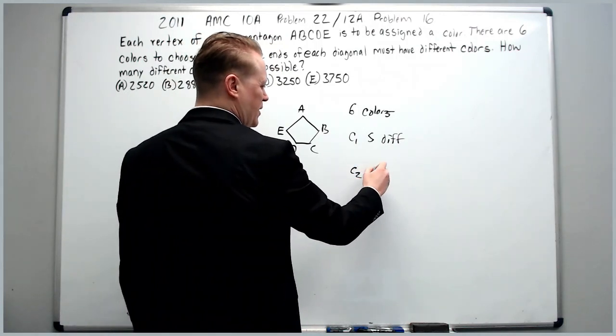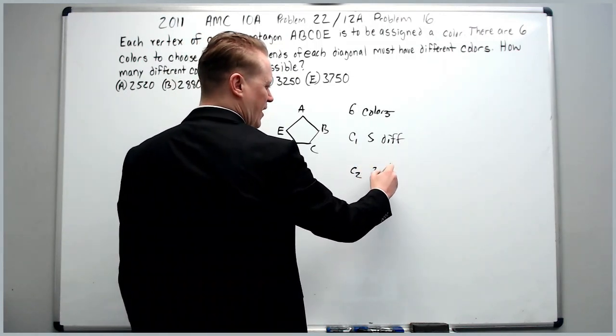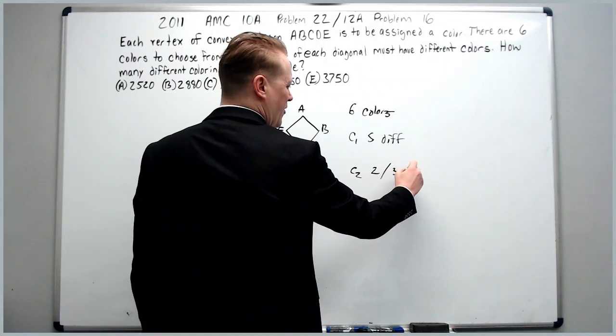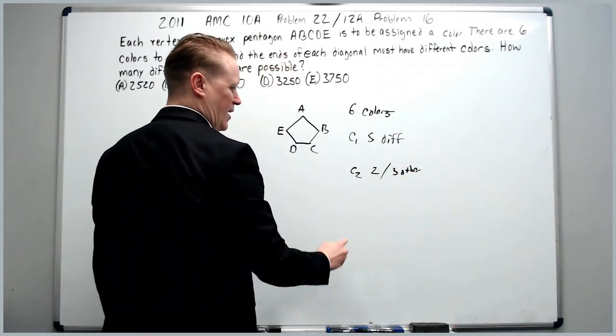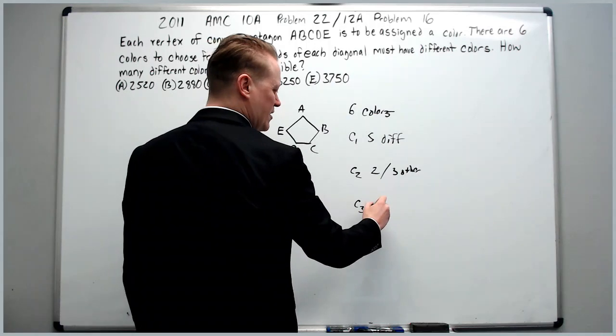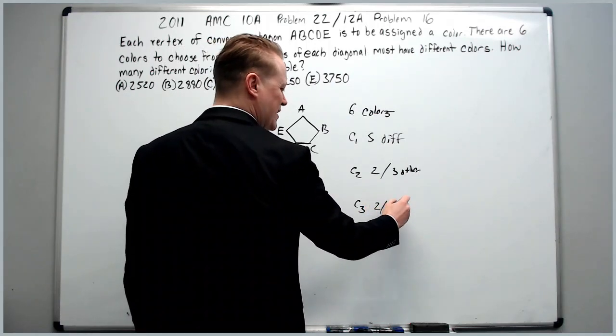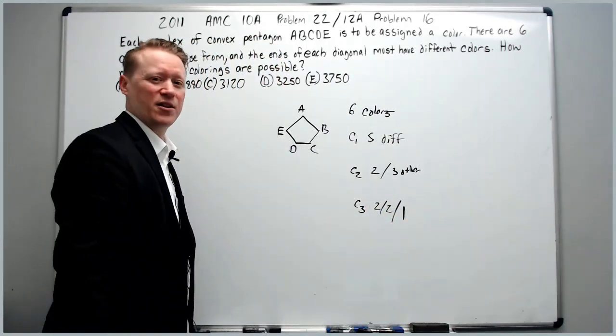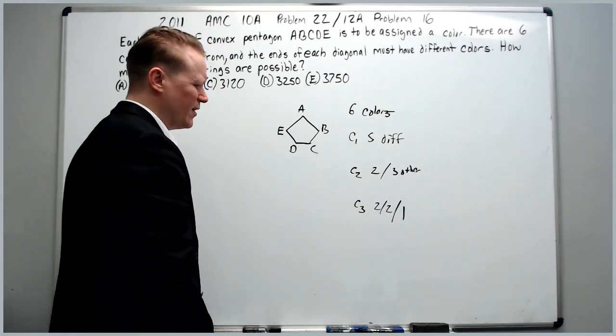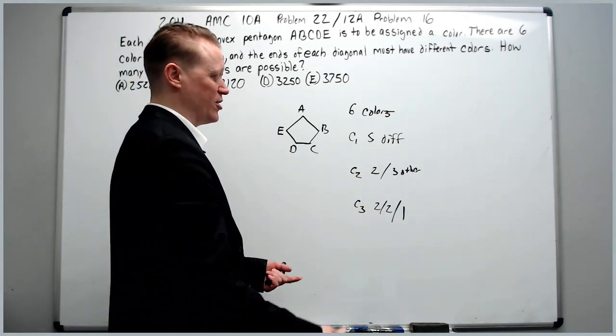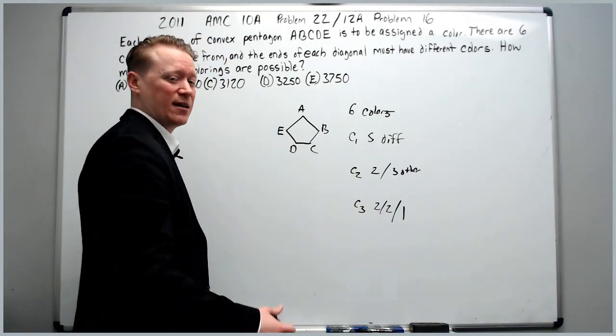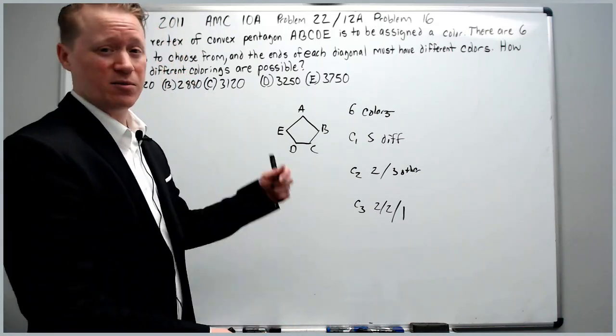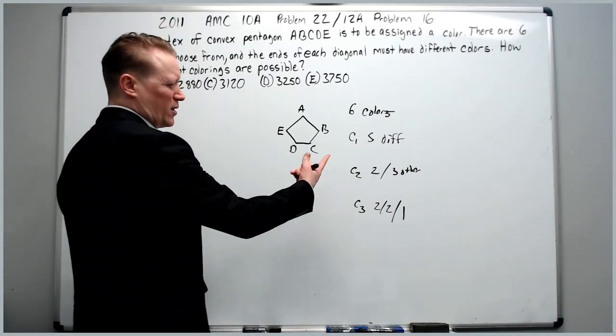Case one is five different colors. Case two will be two one color and then three other colors. Case three will be when there is two of one color, two of a different color, and one of a third color. There's no more cases because that's all you can have. You can't have three of the same color. It's impossible given the restrictions. So you just start working through the cases.